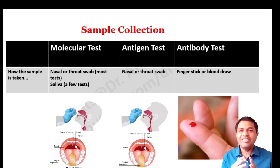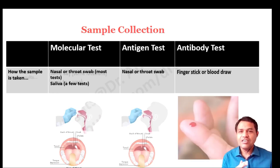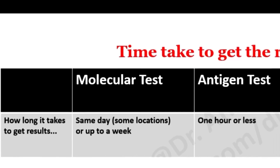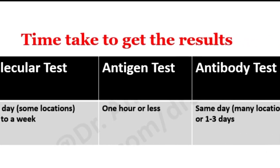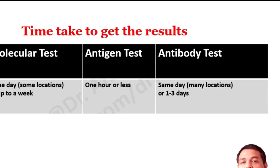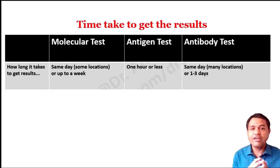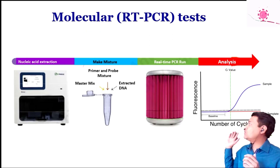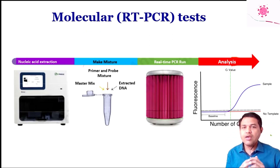Regarding turnaround time: the molecular test result may come the same day or up to a week, depending on the lab location. The antigen test is rapid — results are available in one hour or less. The antibody test result may come the same day or take one to three days depending on the lab.